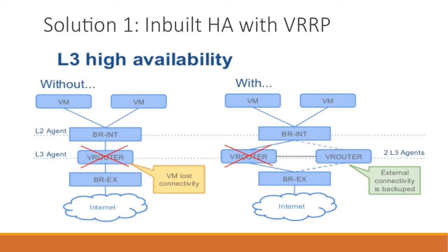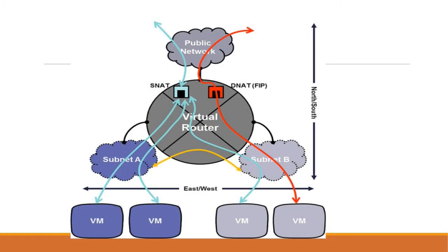Each time you create a virtual router, the system distributes it across the network nodes. When you create a VM, it will have access to two or more virtual routers. If one virtual router goes down, another picks up and maintains communication. This is done using the VRRP protocol and was put in place from the Juno release of OpenStack. That is problem one and solution one.